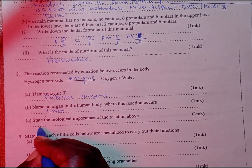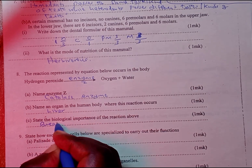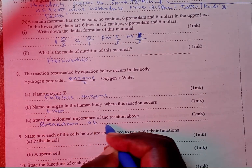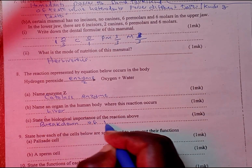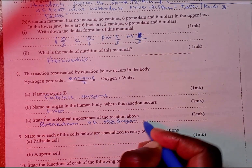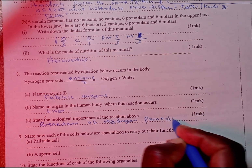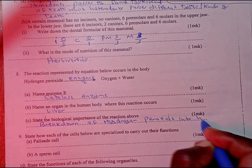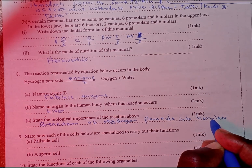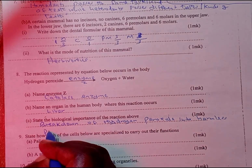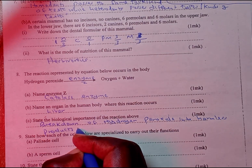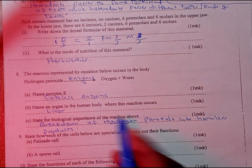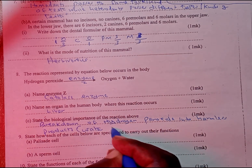Part C: state the biological importance of the reaction above. It helps in the breakdown of harmful hydrogen peroxide into harmless products — in this case water and oxygen.